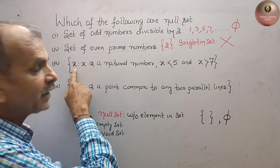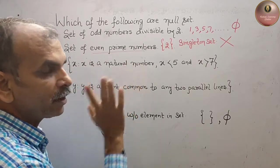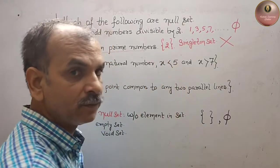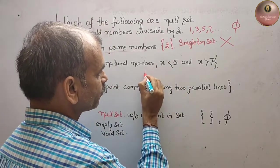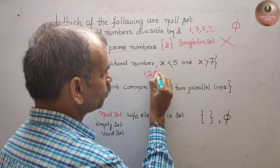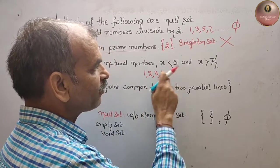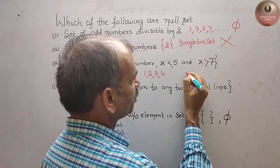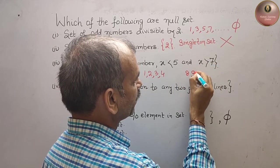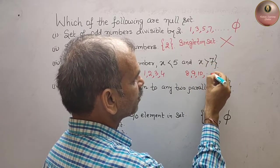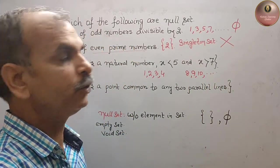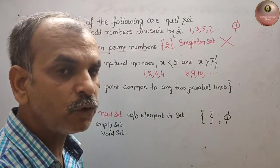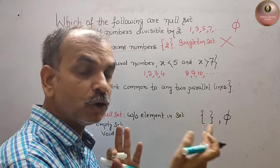Next, the set of all x where x is a natural number. They have given x is less than 5, so natural numbers are 1, 2, 3, and 4, less than 5. And here they have given x is greater than 7, that means it will start with 8, 9, 10, and so on. What they have given you? They have given you 'and'.